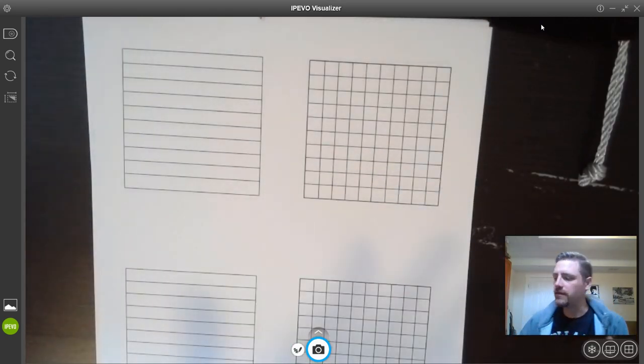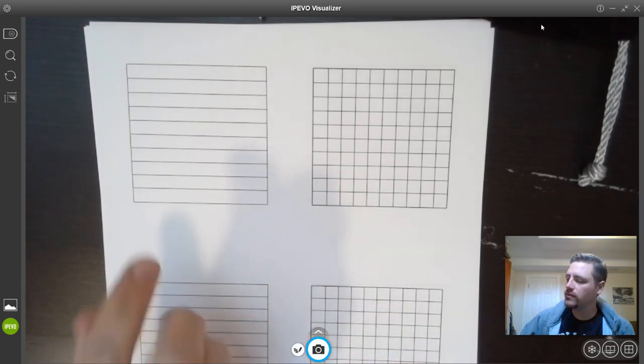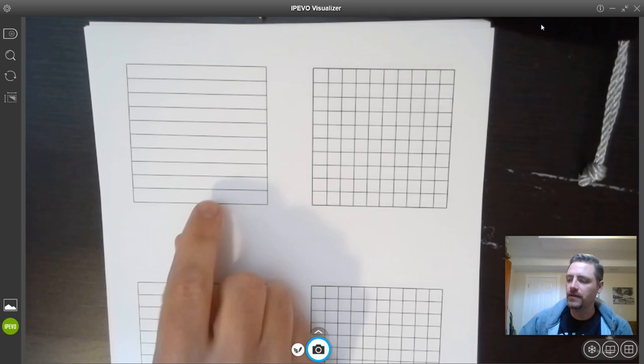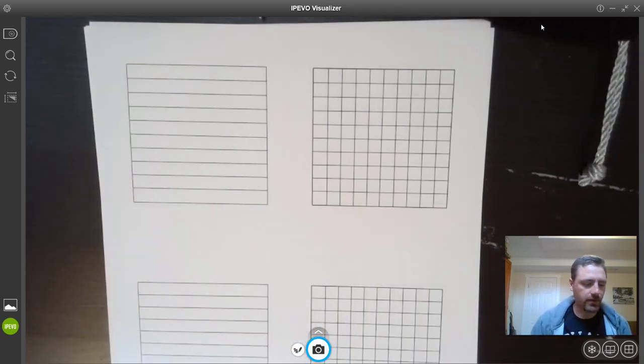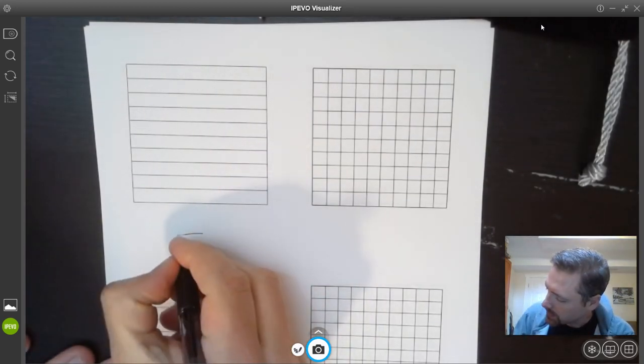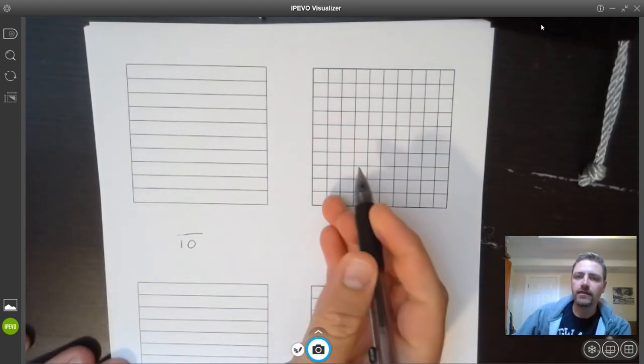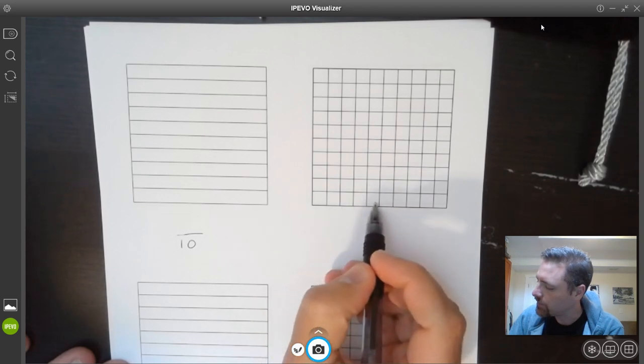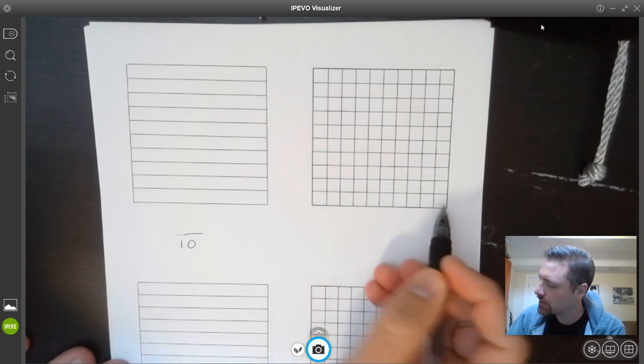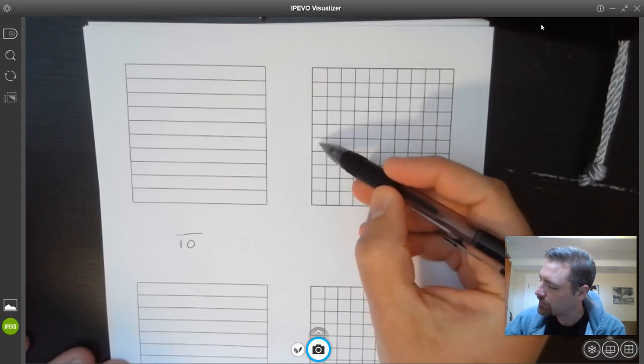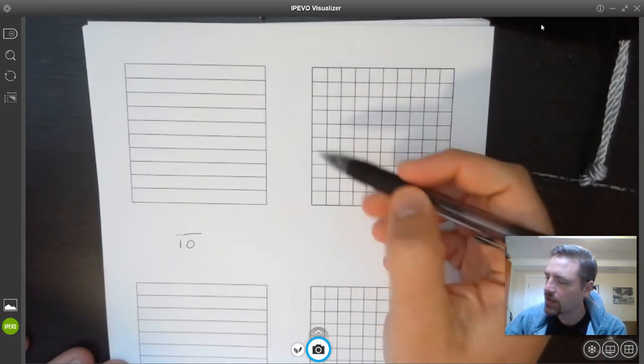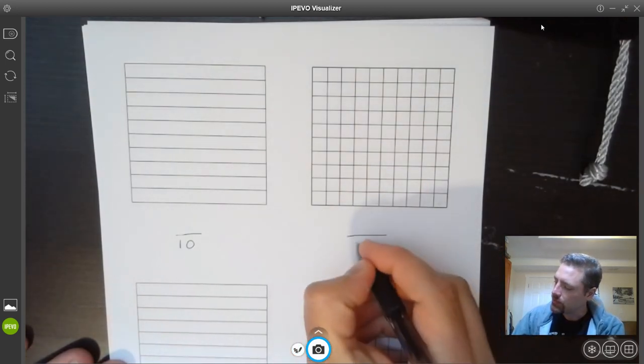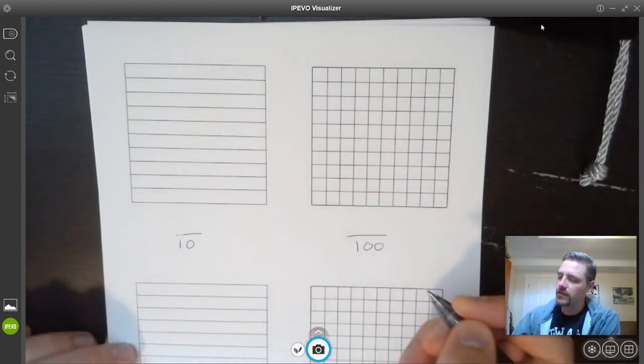First thing I want you to see is that I have two different squares here, but they're the same size. This one is divided into 10 parts, so we're going to mark it with a denominator of 10. And this one is divided into 100 parts. It's got 10 across and 10 going up. We know that 10 times 10 equals 100, so we're going to put 100 over here for our denominator.